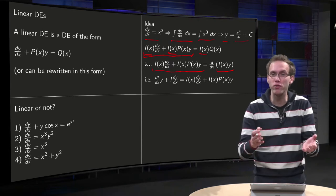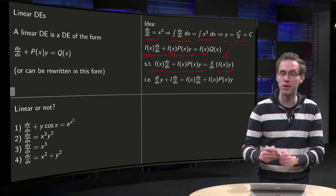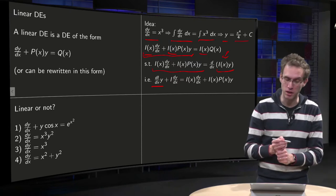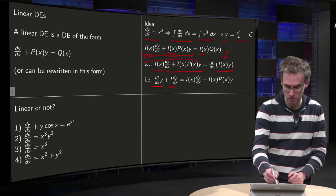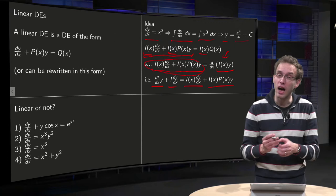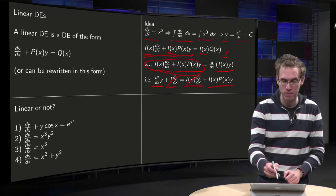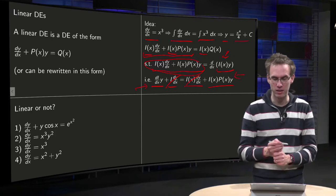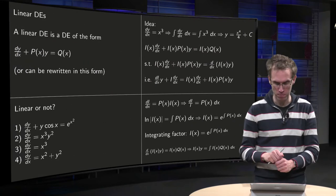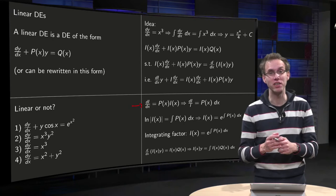This is a sort of inverse product rule. How do we choose our i? If we expand the derivative of i(x) times y using the product rule, we get i' times y plus i times y'. We want this to equal i times y' plus i times p times y. The i times y' terms cancel, so we need i' times y to equal i times p times y. The y cancels, giving us i' equals i times p. We now solve this for i(x), which we can do as a separable equation.